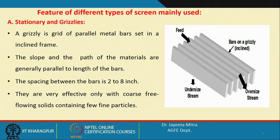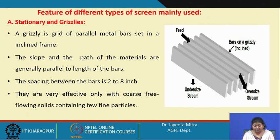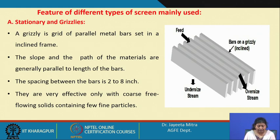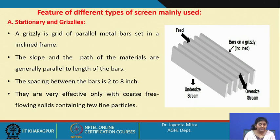The first type is stationary screens or grizzlies. A grizzly is a grid of parallel metal bars set in an inclined frame. Feed enters from one side, the undersize passes through and comes from the lower section, and the oversize moves with the stream. The slope and path of the material are generally parallel to the length of the bar, and the spacing between bars is 2 to 8 inches. Grizzlies are effective only with coarse, free-flowing solids containing few fine particles.